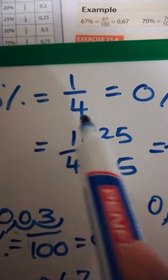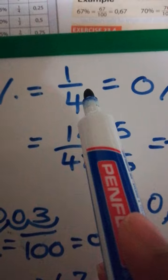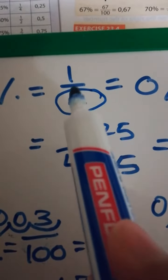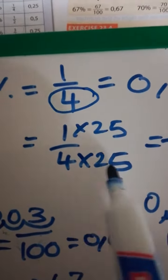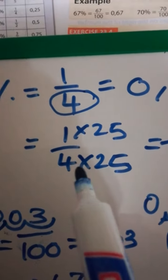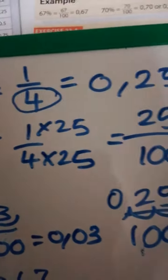So we are going to convert this here into a percentage. In order to do that, we must get the denominator to 100. So what do we do to 4 to get 100? We have to times it by 25. Whatever we do to the denominator, we do to the numerator as well.